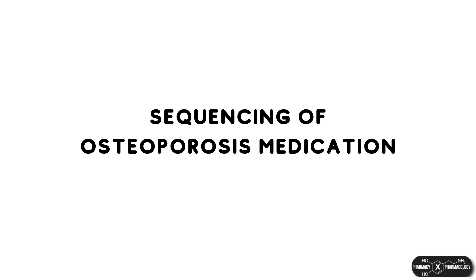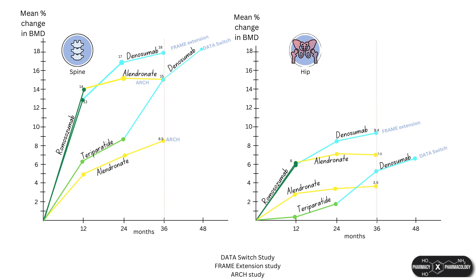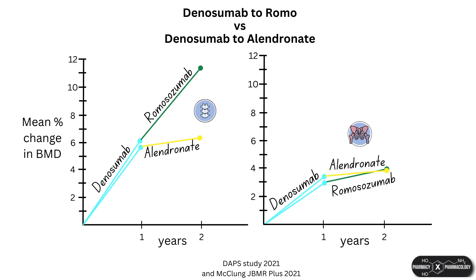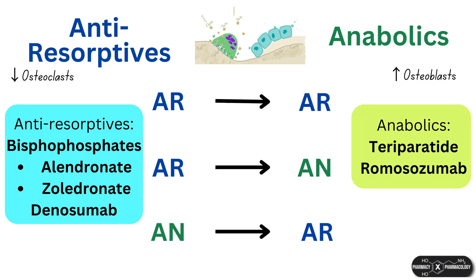This video essay will cover what happens when you sequence courses of different types of osteoporosis drugs one after the other, with regards to gains in bone mineral density at the spine and the hip. Although not always the case, fracture risk reduction is strongly correlated with BMD gains. There are three types of osteoporosis drug transitions: anti-resorptive to anti-resorptive, anti-resorptive to anabolics, and anabolics to anti-resorptives. At the moment there's no official data on anabolic-to-anabolic transitions.